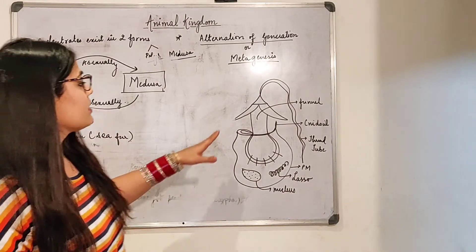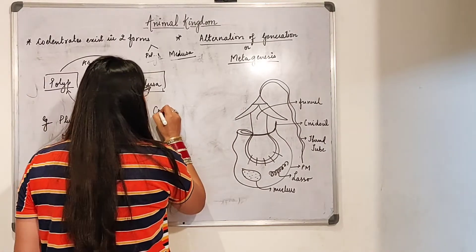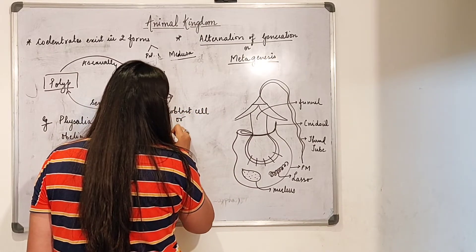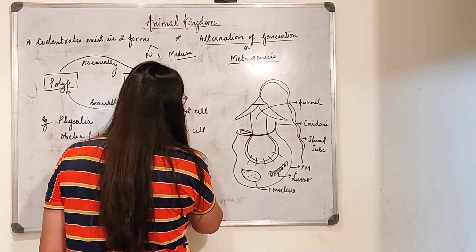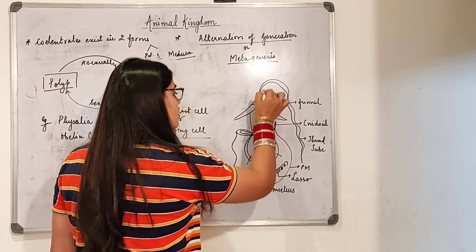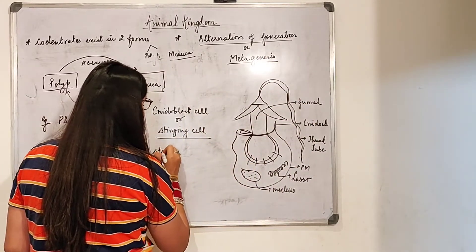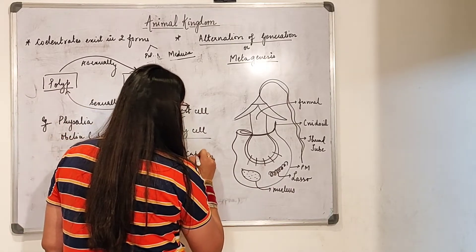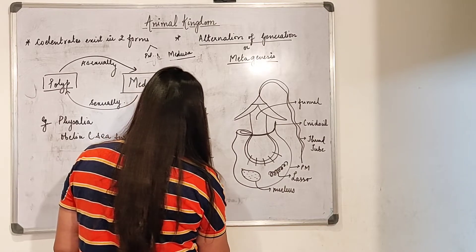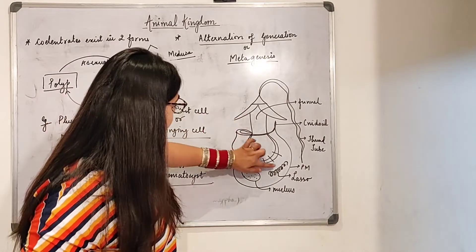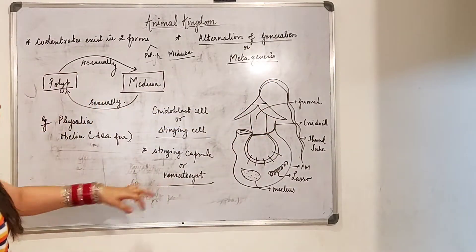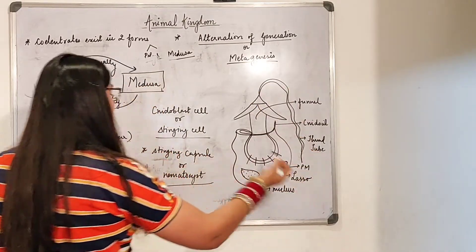Now we study the nidoblast cells. The nidoblast cell is also called the stinging cell — this entire structure is the stinging cell. Inside it there is a single thing coming out, which is known as the stinging capsule, also called the nematocyst. The nematocyst includes the funnel and the thread tube — this entire portion is the nematocyst or stinging capsule.